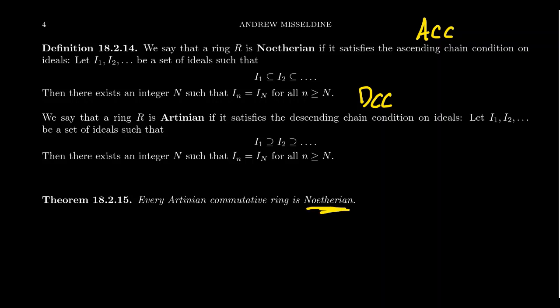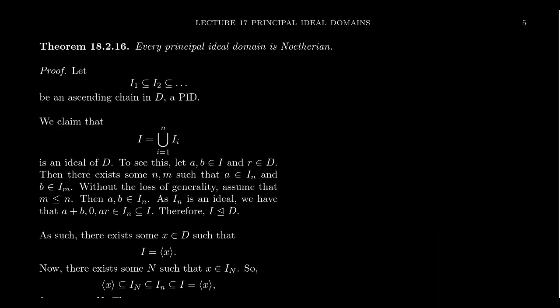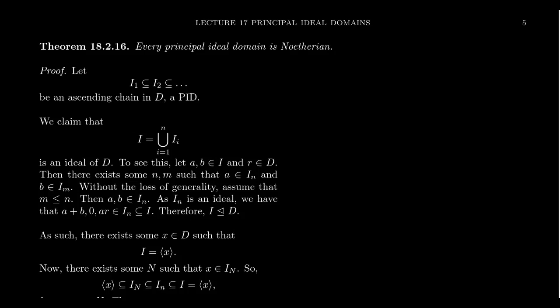The reason we introduced this is that we really want to talk about Noetherian rings, which are going to be important for our conversation about factorization in integral domains. So our reason for Noetherian rings is actually the following theorem: every principal ideal domain is in fact a Noetherian ring — a Noetherian domain. That is, principal ideal domains satisfy the ascending chain condition. So to prove that, we're going to start off with an arbitrary ascending chain of ideals inside of our principal ideal domain D.